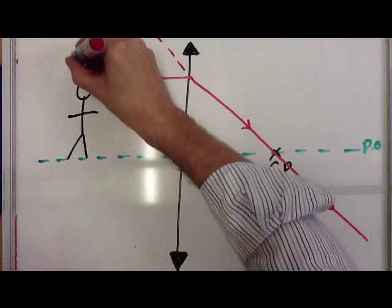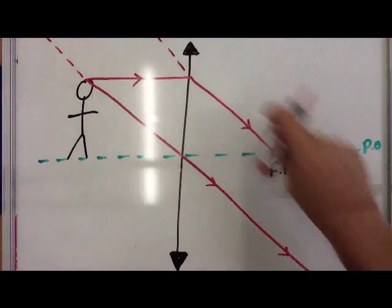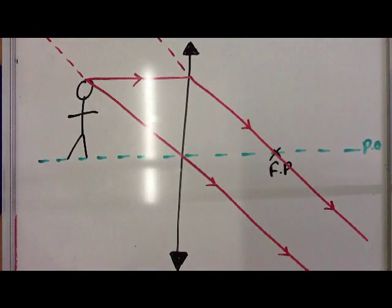If we continue these virtual lines at the back, we should find the same thing. We get no image at all. These lines never ever meet.